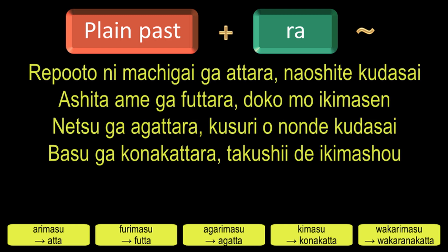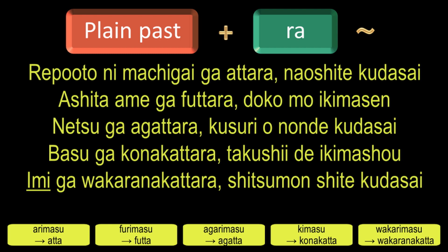And to say 'if you don't understand the meaning, please ask questions,' in Japanese it will be: Imi ga wakaranakattara shitsumon shite kudasai. Here, Imi means meaning, and shitsumon shite is the te-form of the verb shitsumon shimasu, which means to ask questions.